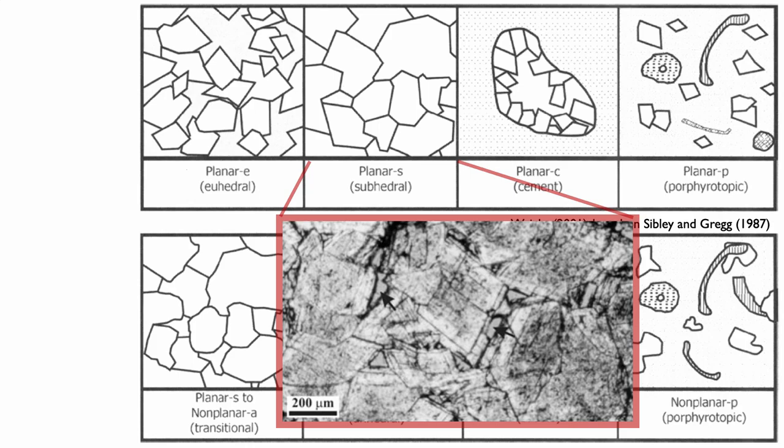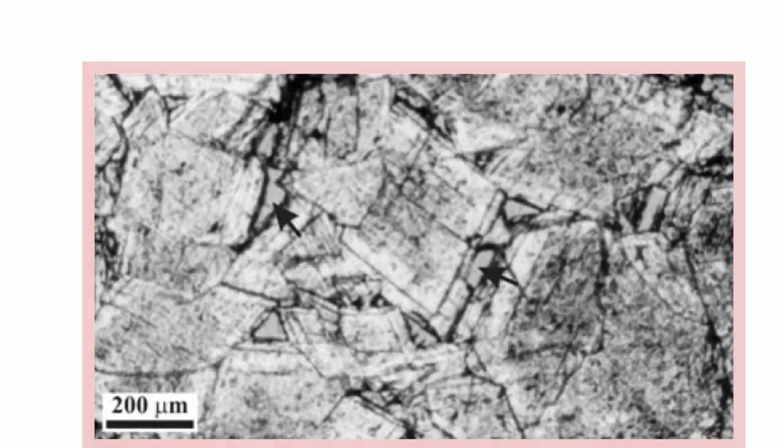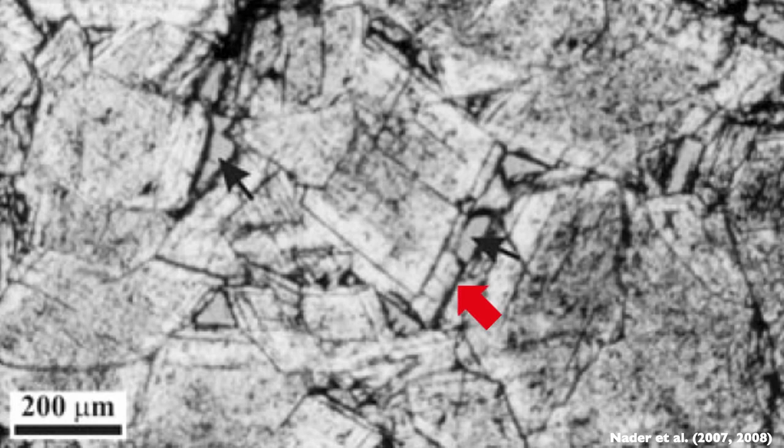Now let's look at some nice planar dolomite. You can see the difference in this picture: all the planes of the dolomites are well expressed. Compare this to the previous pictures, where the planes and the edges of the minerals were not so easy to spot.